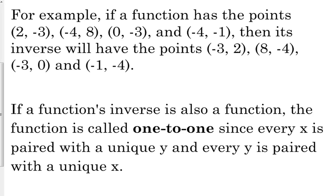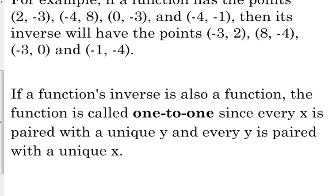It would pass the vertical line test, but it would not pass something we call the horizontal line test. If our function is y = x², when x is positive or negative 3, we get the same y value — we get y = 9. Now, x squared is a function; it passes the vertical line test. But its inverse function is not an actual function — it would just be a relation, and it would not pass the vertical line test.